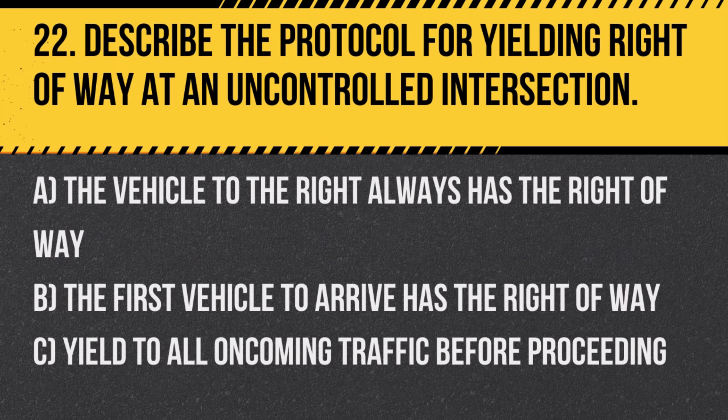Question 22: Describe the protocol for yielding right of way at an uncontrolled intersection. A. The vehicle to the right always has the right of way. B. The first vehicle to arrive has the right of way. C. Yield to all oncoming traffic before proceeding. Answer: A. The vehicle to the right always has the right of way. At uncontrolled intersections, the right of way rule applies, giving priority to the driver on the right.